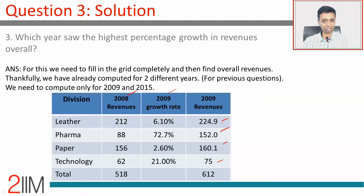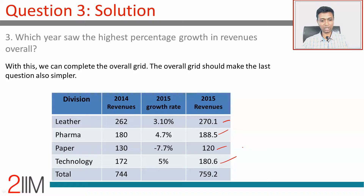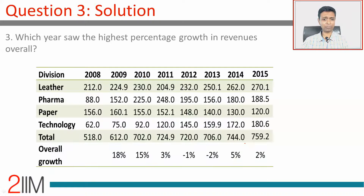We have already seen this approach. The 2014 revenues have been given and the 2015 growth rates have been given, so you can find 2015 as well. Now we have the entire grid — the whole table from 2008 to 2015 — with all the revenue numbers, so we can find all the totals and compute the growth rates.